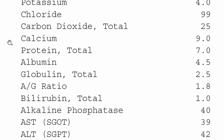Moving right along, we have the protein category: total protein, albumin, globulin, and the albumin-to-globulin ratio. Total protein is just the total amount of protein in your blood. Albumin is what we call a carrier protein — its job is to carry hormones and other chemicals around in your body. If these hormones or chemicals are not carried, they may react with everything, so they need albumin to shuttle them around the body and bring them where they need to go. Albumin is highly concentrated in the liver, though it's also found in other parts of the body.